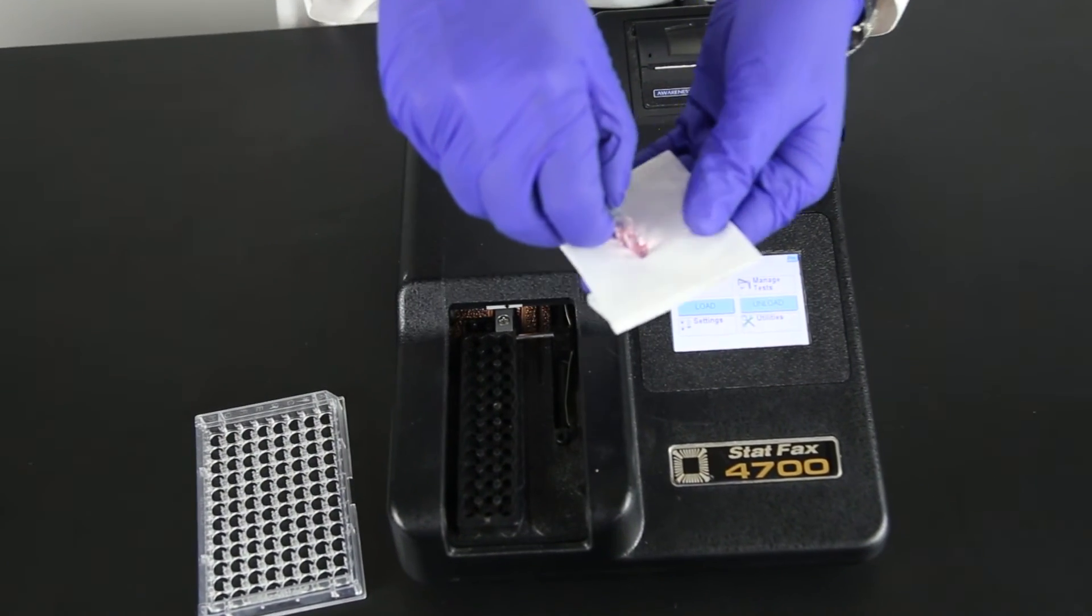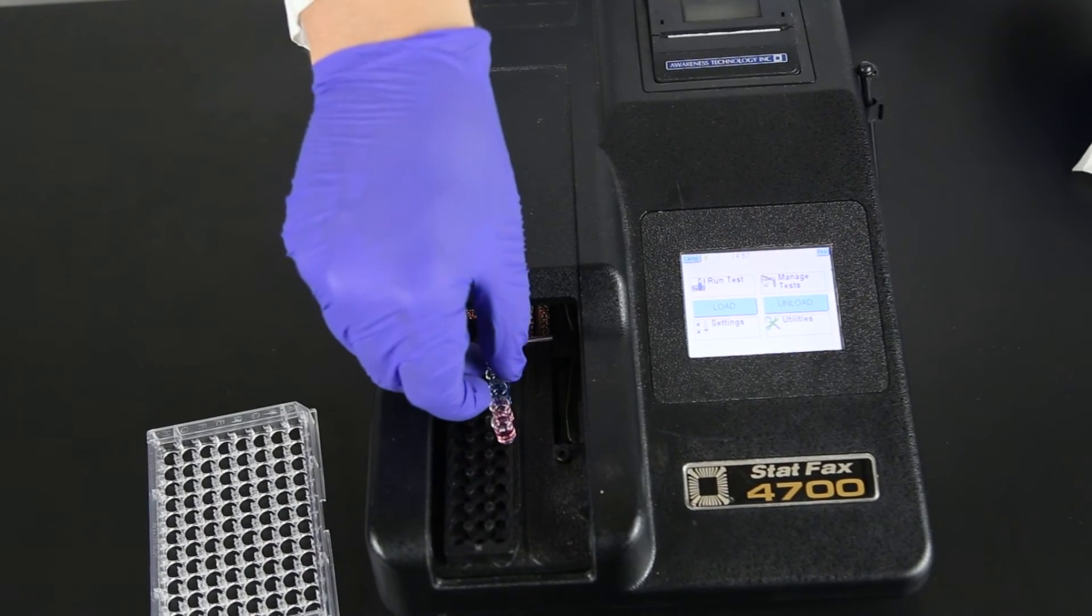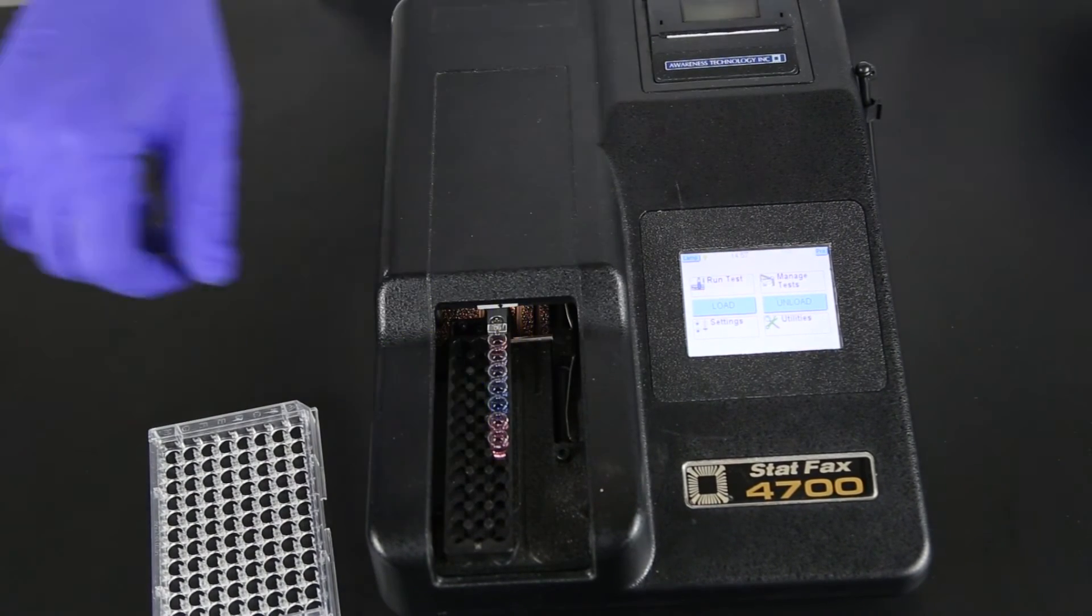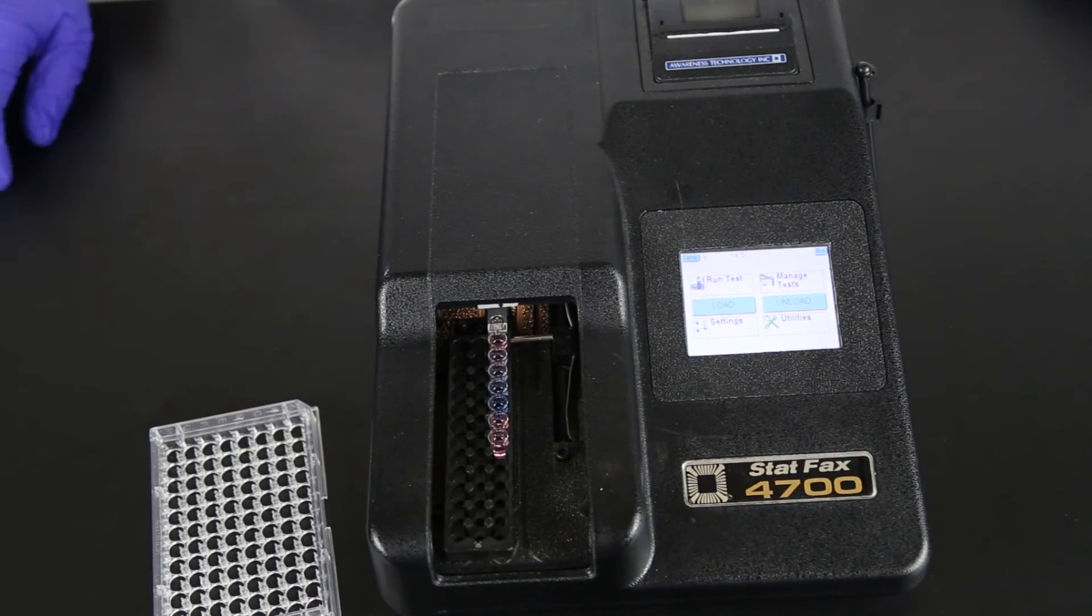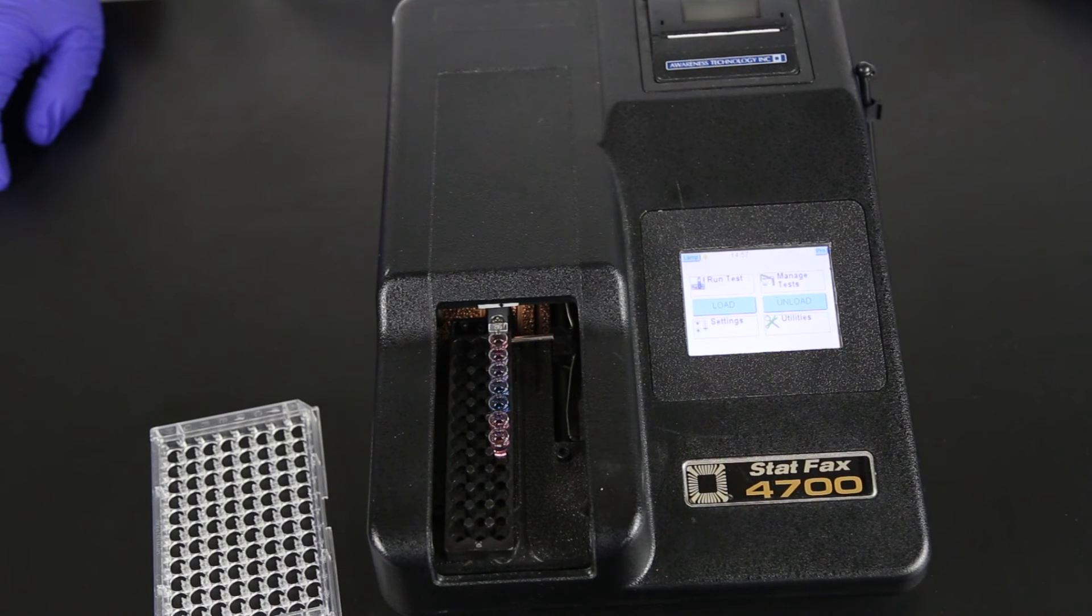Remove from the well holder. Wipe the bottom of the microwells with a dry cloth or towel and transfer to the far right slot of the tray holder for Neogen's StatFax microwell strip reader. Results should be read within 20 minutes after the addition of red stop solution.